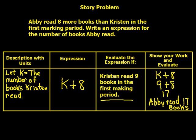One more before you work on your own: Abby read eight more books than Kristen in the first marking period. Write an expression for the number of books Abby read. Let K equal the number of books Kristen read. The expression is K plus 8, because Abby read eight more. If Kristen read nine books: K plus 8 equals nine plus 8 equals seventeen. Abby read seventeen books. Go ahead and pause the video — there are about five more to solve on your own.